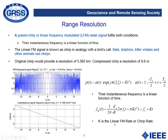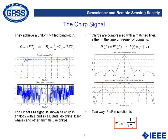K is what is known as the linear FM rate or chirp rate. If we represent the instantaneous frequency as a function of the pulse duration, we will see this linear behavior. The main characteristic of the chirp signal is that it achieves a uniformly filled bandwidth. If we look at the spectrum of the chirp, it presents a uniform spectrum — this will be the amplitude.